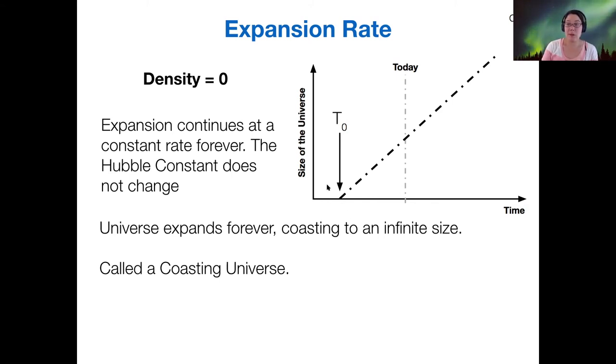So because it's coasting, because it has a constant expansion rate, then this is called a coasting universe.